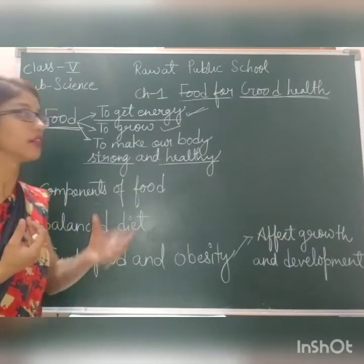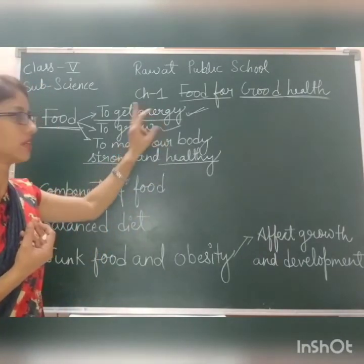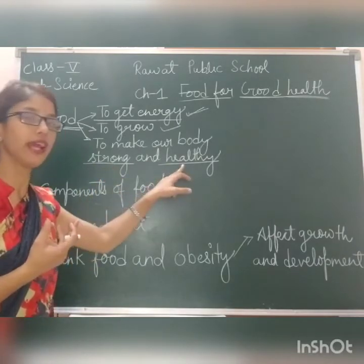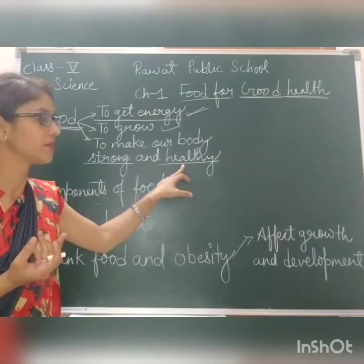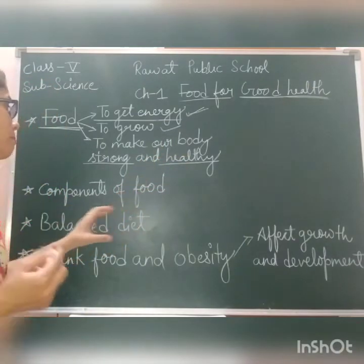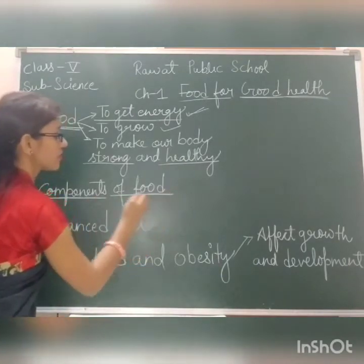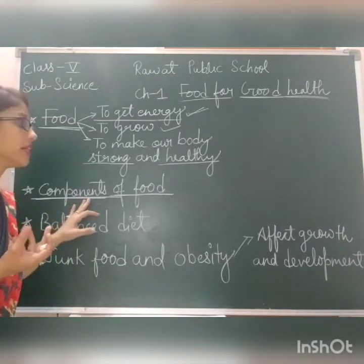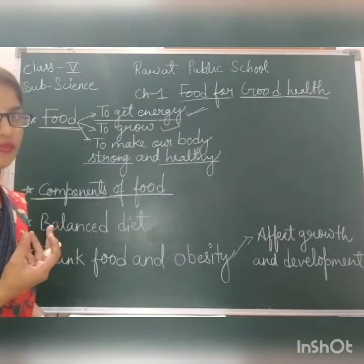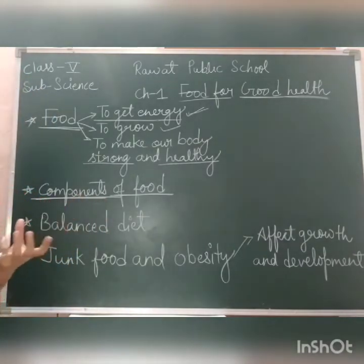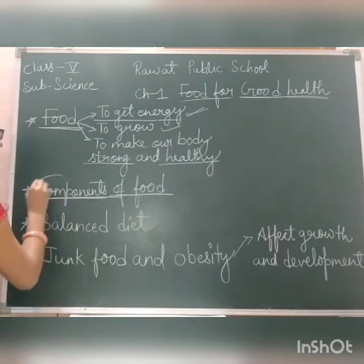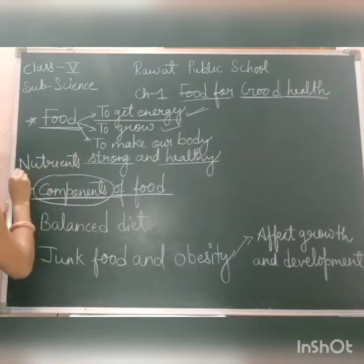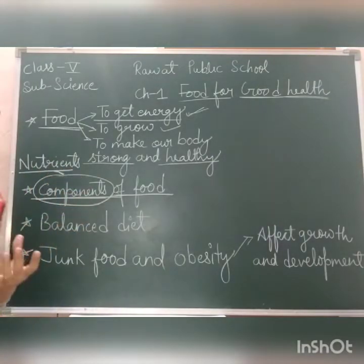But how is this possible? How does food help us get energy? How does it help us grow, and how does food make our body strong and healthy? It is possible because of the components present in the food — the chemical substances called nutrients. We call these components nutrients.